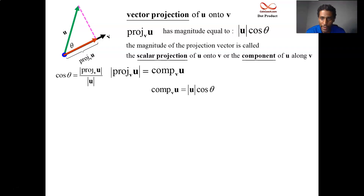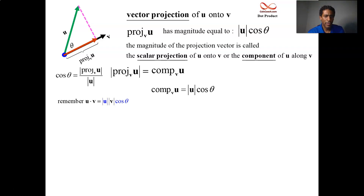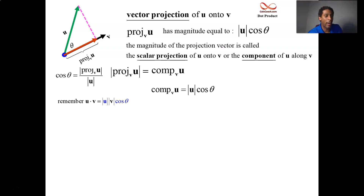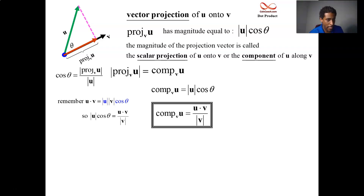In a previous video, we tied together the dot product and the angle between two vectors: U·V equals |U||V|cos(theta). We're currently looking at a formula involving |U| and cos(theta). If we take that equation and divide both sides by |V|, we get a way to represent |U|cos(theta) — it equals U·V over |V|. So the magnitude of the projection vector, the scalar projection, can be found by a simple calculation: take the dot product between the two vectors and divide by the magnitude of the vector you're projecting onto.